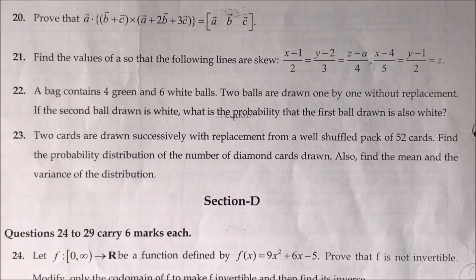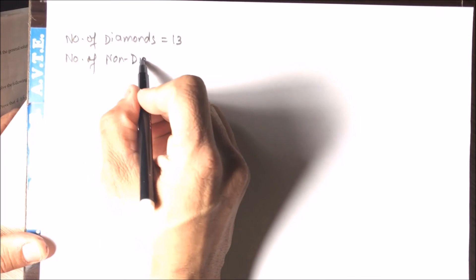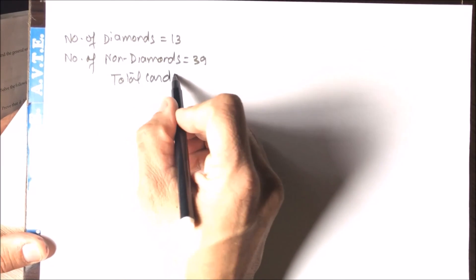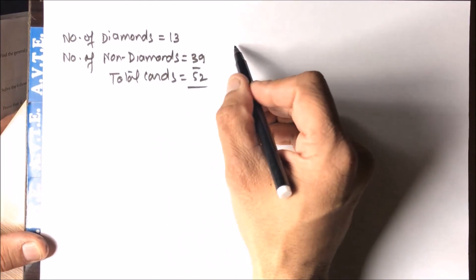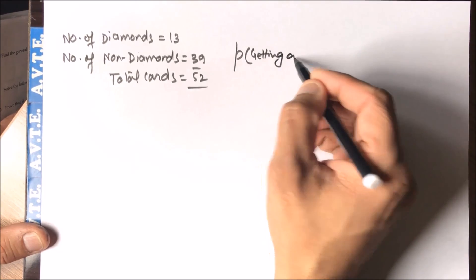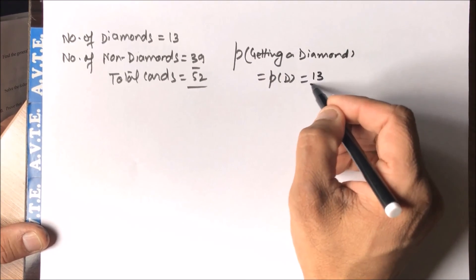Clearly, the success is to get a diamond. Since it is with replacement, we write: number of diamonds = 13, number of non-diamonds (other cards) = 39, and total cards = 52. So the probability of getting a diamond is 13 over 52.